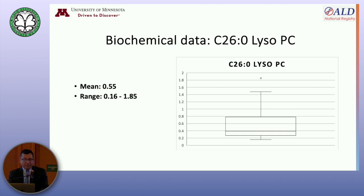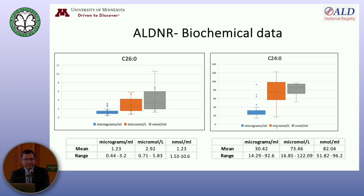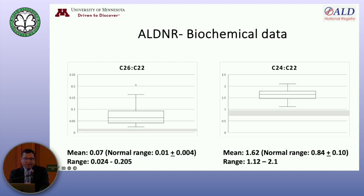This is just the distribution of the biochemical data. VLCFA data is not available for every single kid. As we know, different states have different cutoffs and it gets a little tricky. The range is from 0.16 to 1.85 with a mean of 0.55. Same for C26 and C24 assays — different labs, different units. C26:22 ratios and C24:22 ratios are presented here; the gray bars are the normal zones. So far we have quite a bit of distribution there, but it looks like the newborn screen programs are doing a really good job picking up kids with these biochemical deficiencies.